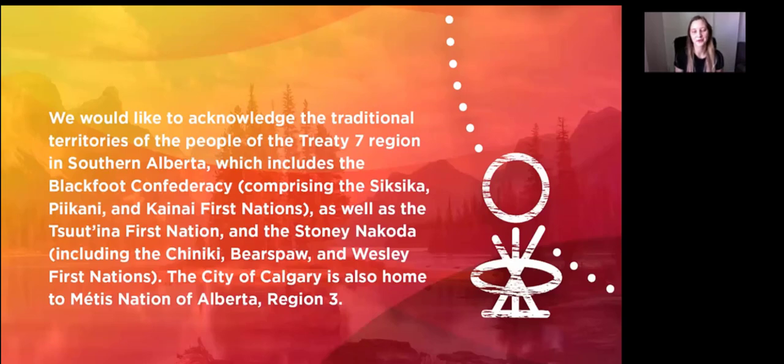Today's session is being recorded in Calgary, which is located on the traditional territories of the people of Treaty 7 region in southern Alberta, which includes the Blackfoot Confederacy, comprising the Siksika, the Piikani, and the Kainai First Nations, as well as the Tsuut'ina First Nations and the Stoney Nakoda, including the Chiniki, Bearspaw, and Wesley's First Nations. The City of Calgary is also home to Métis Nation of Alberta Region 3. The University of Calgary is situated on land adjacent to where the Bow River meets the Elbow River, and the traditional Blackfoot name of this place is Mohkinstsis, which we now call the City of Calgary.